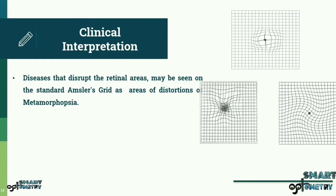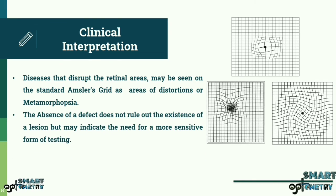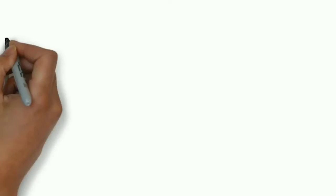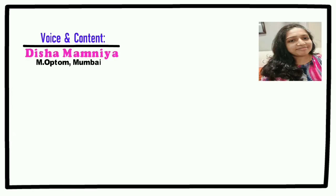Clinical Interpretation. Diseases that disrupt the retinal areas may be seen on the standard Amsler's grid as areas of distortions or metamorphopsia. The absence of a defect does not rule out the existence of a lesion but may indicate the need for a more sensitive form of testing. In the next video, we are going to take a look at the types of modified testing methods that can be employed using Amsler's grid. Stay tuned with Smart Optometry for more educational videos.